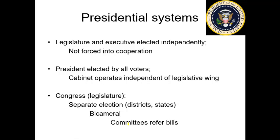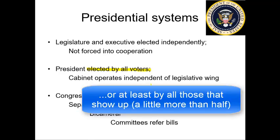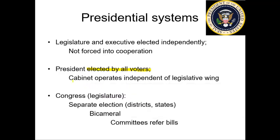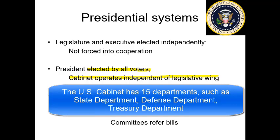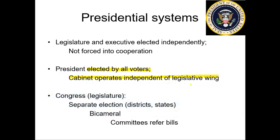Whereas in the parliamentary system, the majority party creates a cabinet and has pretty much unopposed control over passing the policies they were elected to pursue. The president is elected by all of the voters in the U.S. — the only office elected by all voters — which is one reason the presidential election gets so much attention. The cabinet is appointed by the president, must be approved by the Senate, but operates separately and independently of the legislative branch, Congress.